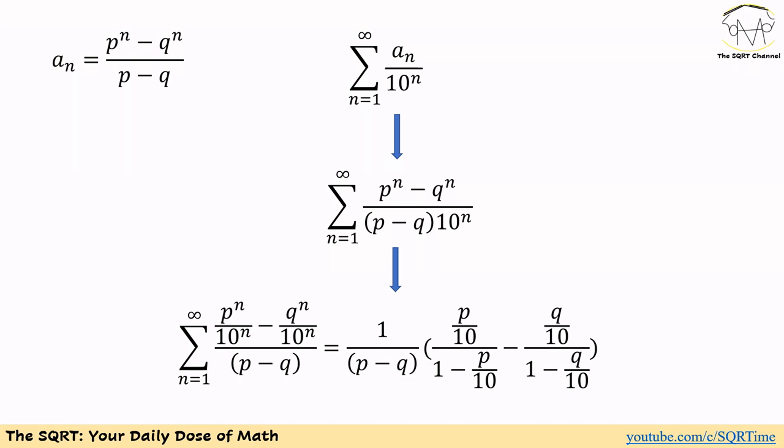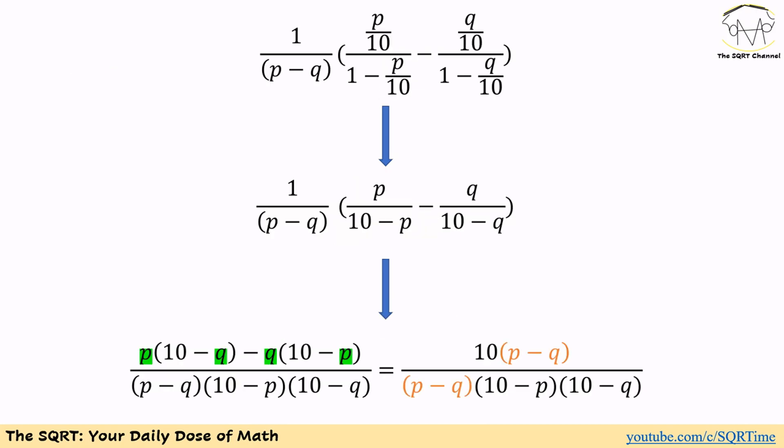If we take out P minus Q and write it as 1 over P minus Q times the Sigma, we can find the value of P to the power of n over 10 to the power of n — it can be written as (P/10) over (1 minus P/10). We use the same approach for Q to the power of n over 10 to the power of n. Then simplifying, for the first term I write P over 10 minus P, and for the second term Q over 10 minus Q.